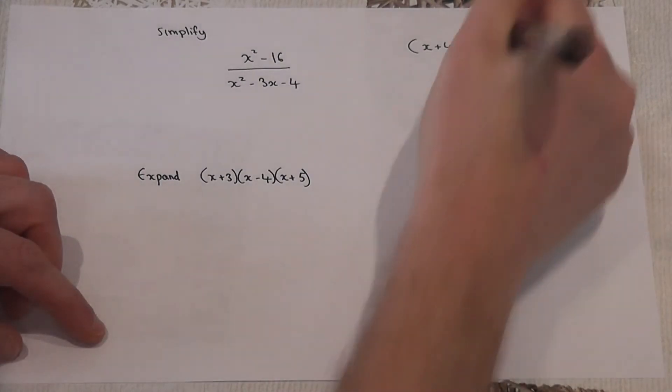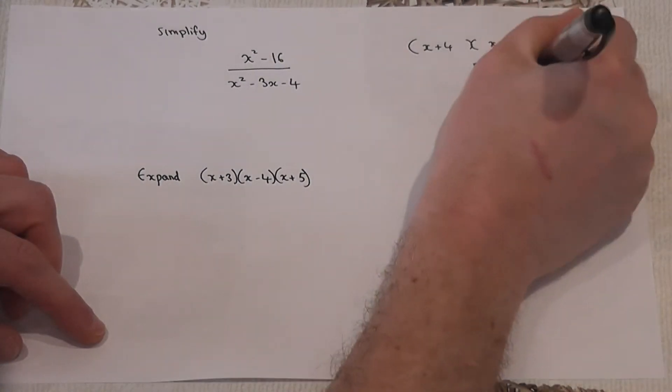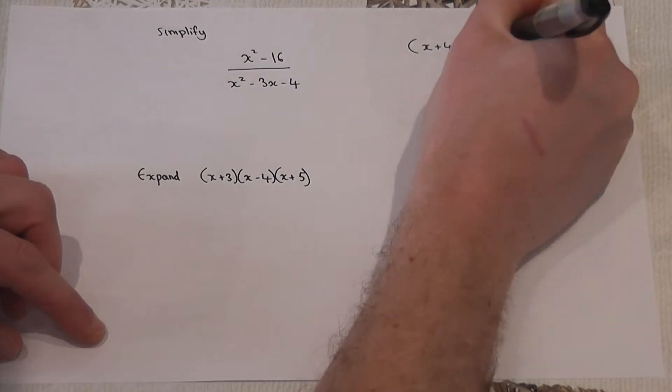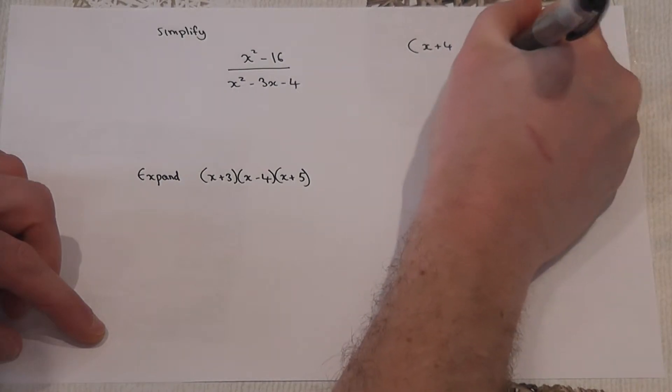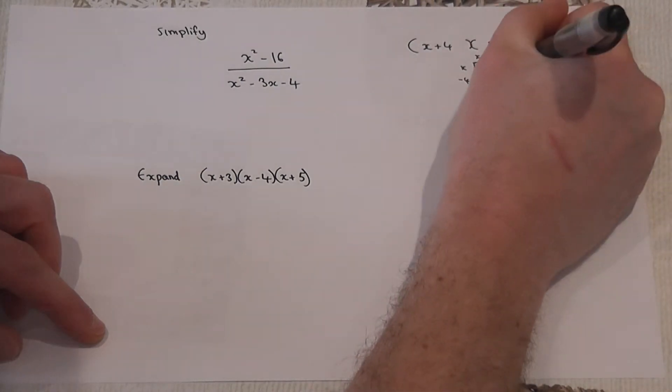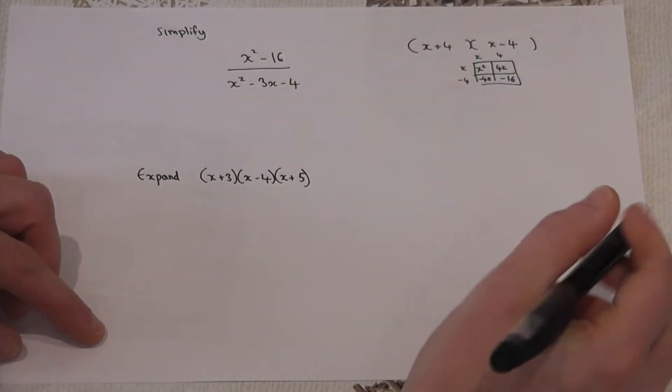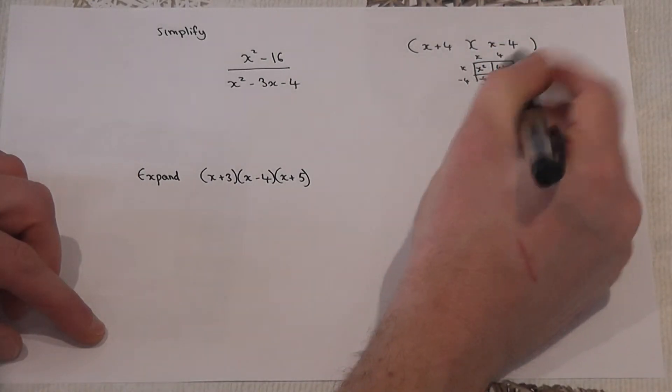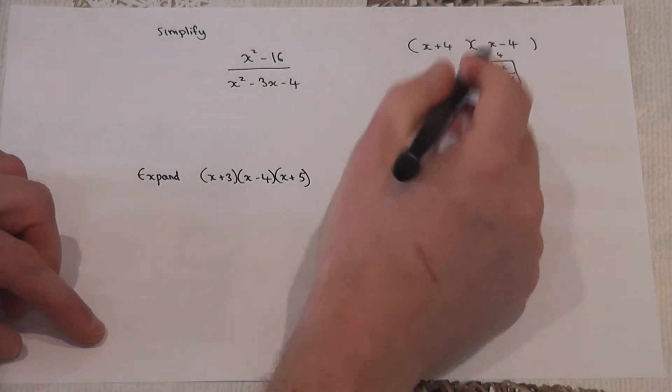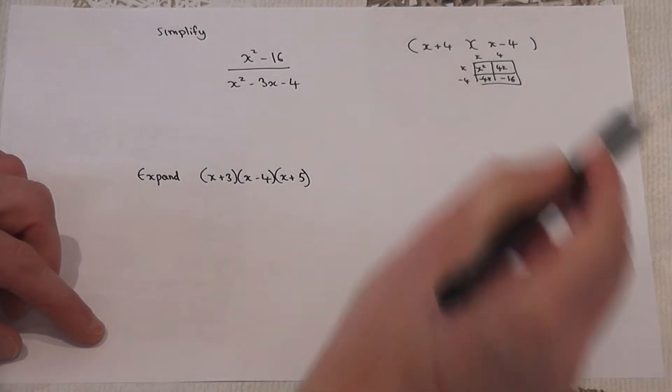The reason being, if you try to expand this, x times x and 4 times minus 4, you get an x squared, a 4x, a minus 4x, and a minus 16. And the 4x and the minus 4x cancel out and you're left with x squared minus 16.